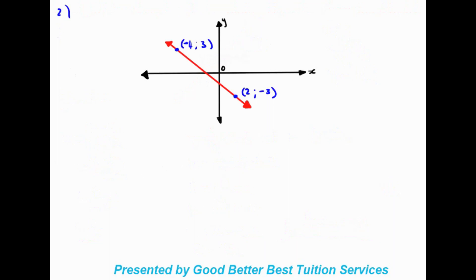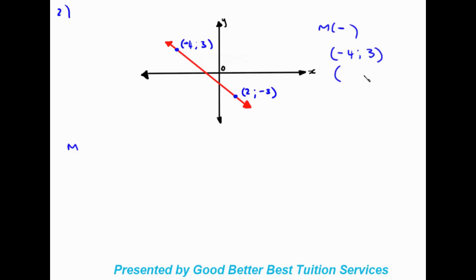Here we have example two. Straight away we can see the gradient is going to be negative because it's heading in that other direction. Our points are (-4, 3) and (2, -3). We'll call the first one point one and the second one point two, so this is x₁, y₁ and x₂, y₂.